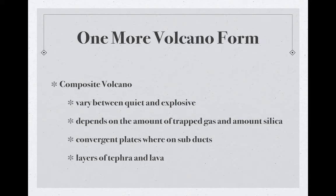One more type of volcano is the composite volcano, and they vary. They alternate between quiet and explosive eruptions, layering in that way — a composite of both. They usually form at convergent plates with subduction zones and have layers of tephra and layers of lava. What type of eruption it's going to have depends on the amount of trapped gas and the amount of silica — those factors contribute to whether it's a quiet or explosive eruption.